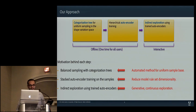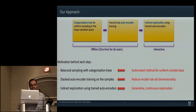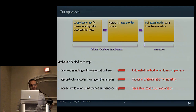Here's a schematic overview of our approach. We first utilize categorization trees for sampling the nonlinear procedural design space as uniformly as possible with respect to shape similarities, which I will introduce in a minute. We then use these samples in training an autoencoder. We utilize the trained autoencoder — more specifically the decoder part of it — in indirect exploration of this 3D procedural modeling space, using only a few parameters which represent the bottleneck layer of the autoencoder.